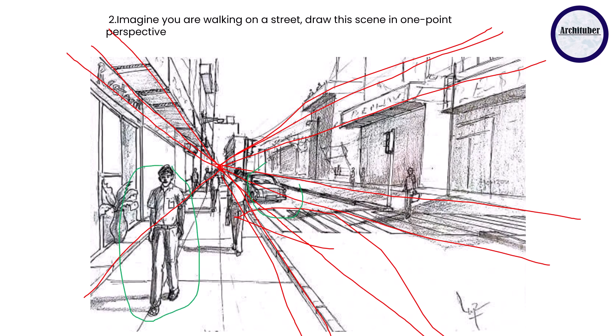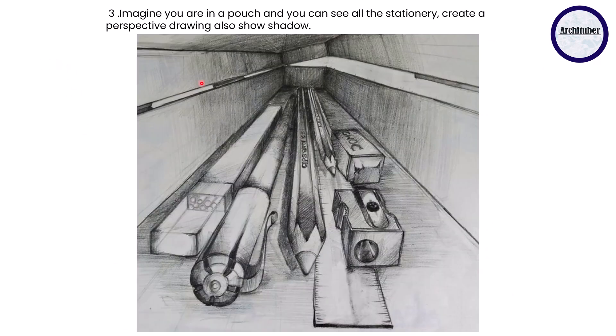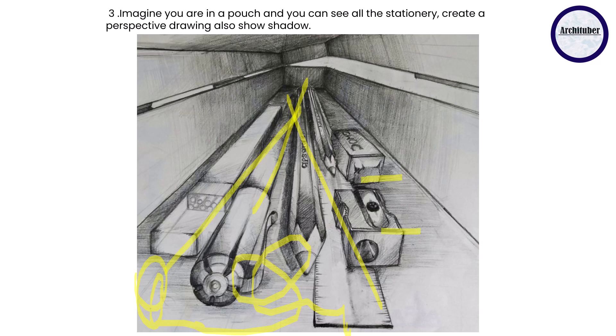This is a very interesting question: imagine you are in a pouch and you can see all the stationary items, create a perspective drawing also show a shadow. So whatever you can see over here is the pouch or a compass and you are sitting somewhere here, and you can see everything which is in the pouch. So you can show pencils, pen, marker, scale, then your eraser, sharpener, everything of that sort.